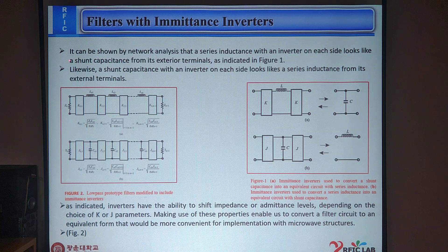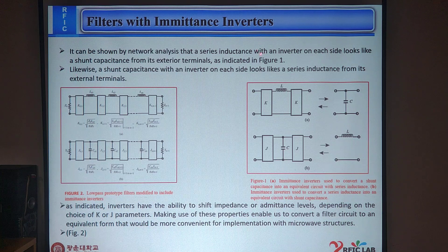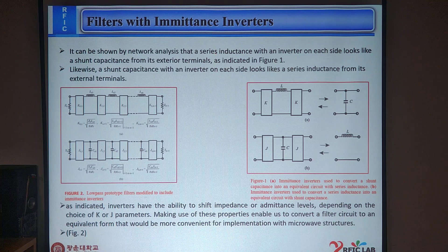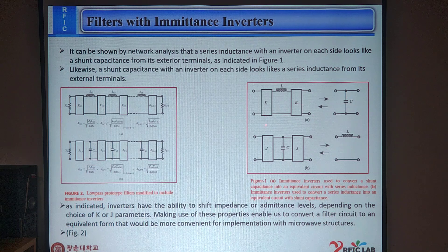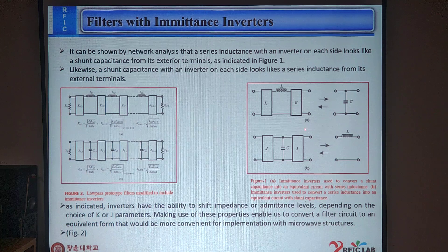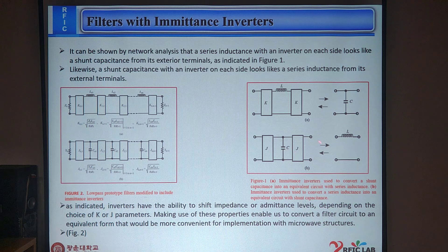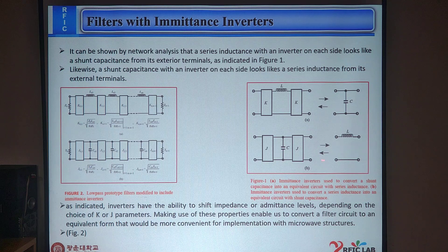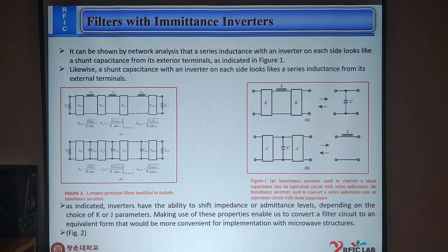This is our next slide. Content filters with imittance inverter. It can be shown in the network analysis that a series inductance with the inverter on each side looks like a shunt capacitance from its exterior terminals as indicated in Figure 1. Here, we can see in this figure imittance inverter used to convert a shunt capacitance into an equivalent circuit with a series inductance. We can see in the figure how we can convert the imittance inverter in a shunt capacitance with this equivalent circuit.